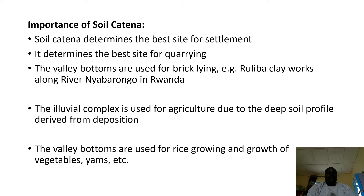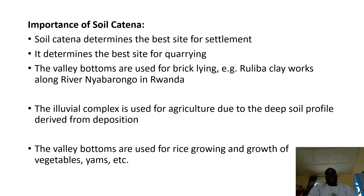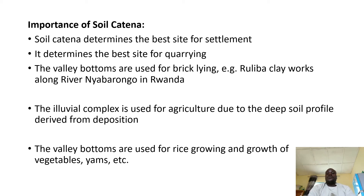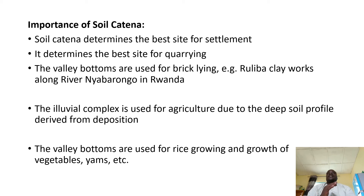The valley bottoms are used for bricklaying. For example, in Rwanda we have Ruriva clay works — at the bottom of the hill that's where they get clay for making bricks. The colluvial complex is used for agriculture due to its deep soils. The valley bottoms are used for rice growing, vegetables, yams, etc. If you were to construct a road, you would also look at the nature of the land and decide whether to construct it in the colluvial, eluvial, or alluvial zone.